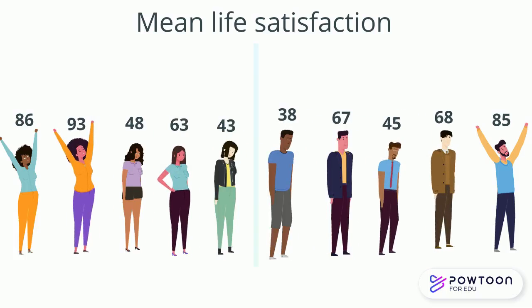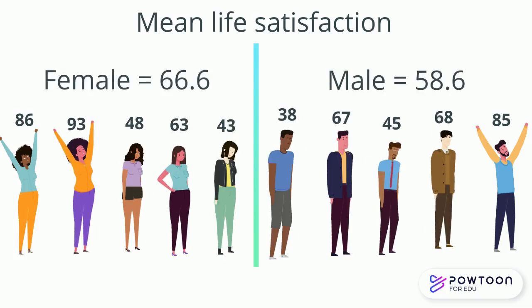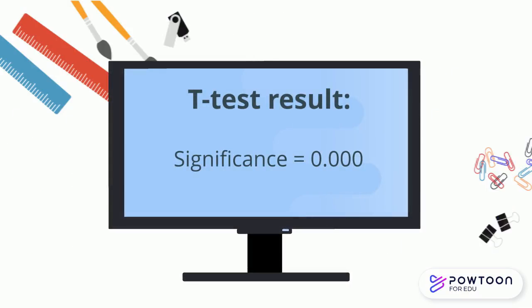The t-test compares the mean of your dependent variable for both categories of the independent variable to see if they significantly differ from one another. So here it compares the mean life satisfaction for females compared to males. The t-test provides a p-value, which if it is below 0.05, like ours is here, tells us that there is a significant difference between the two categories. So here, men and women significantly differ in life satisfaction, with women having a higher life satisfaction than men.